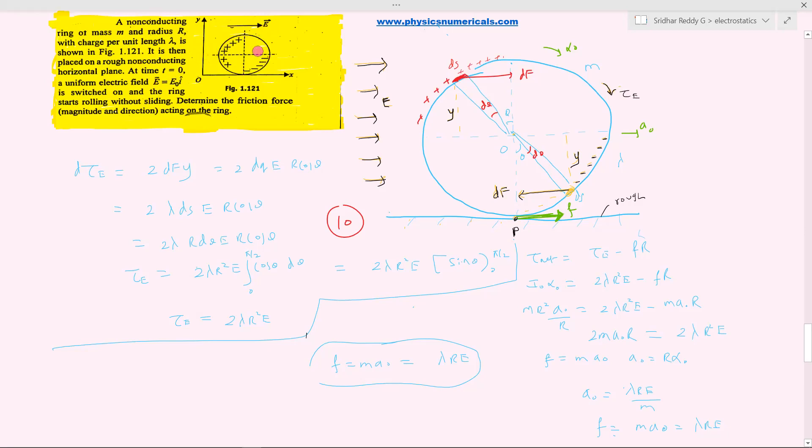Then I'll switch on electric field E equal to E naught i cap, and the ring starts rolling without sliding. Determine the frictional force magnitude and direction acting on the ring. What is our ring? This is a ring. Let me show that thick line. All of you are able to see this ring. I do have this ring. Then here the quarter circle is positively charged and the other quarter circle is negatively charged here. I'll switch on a uniform electric field.